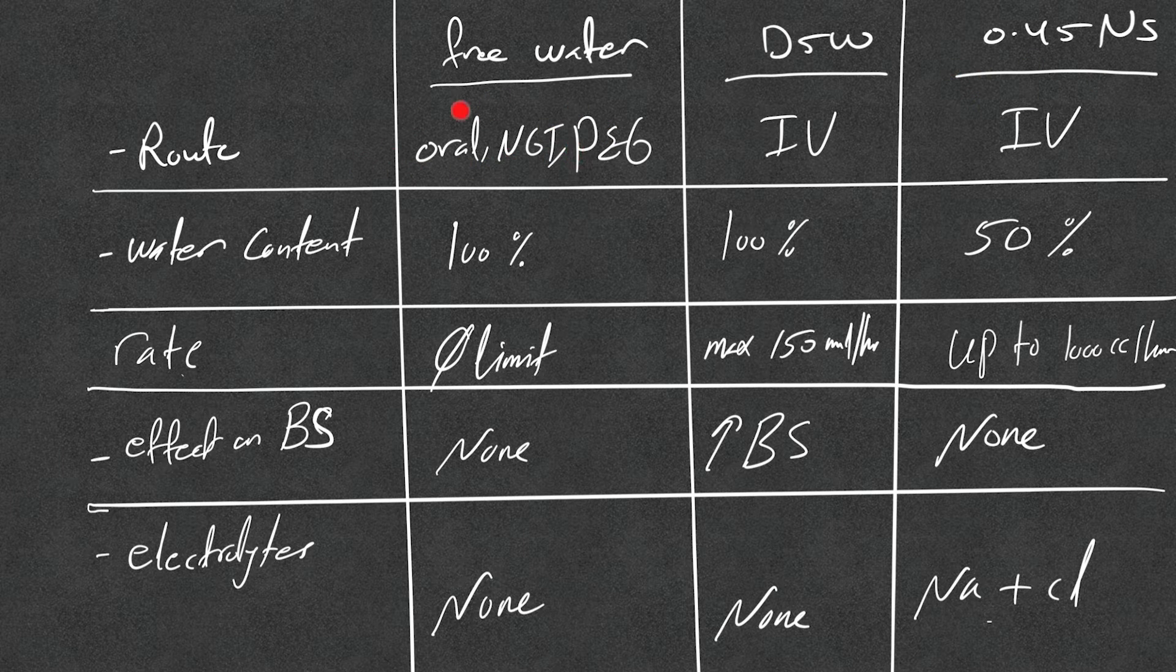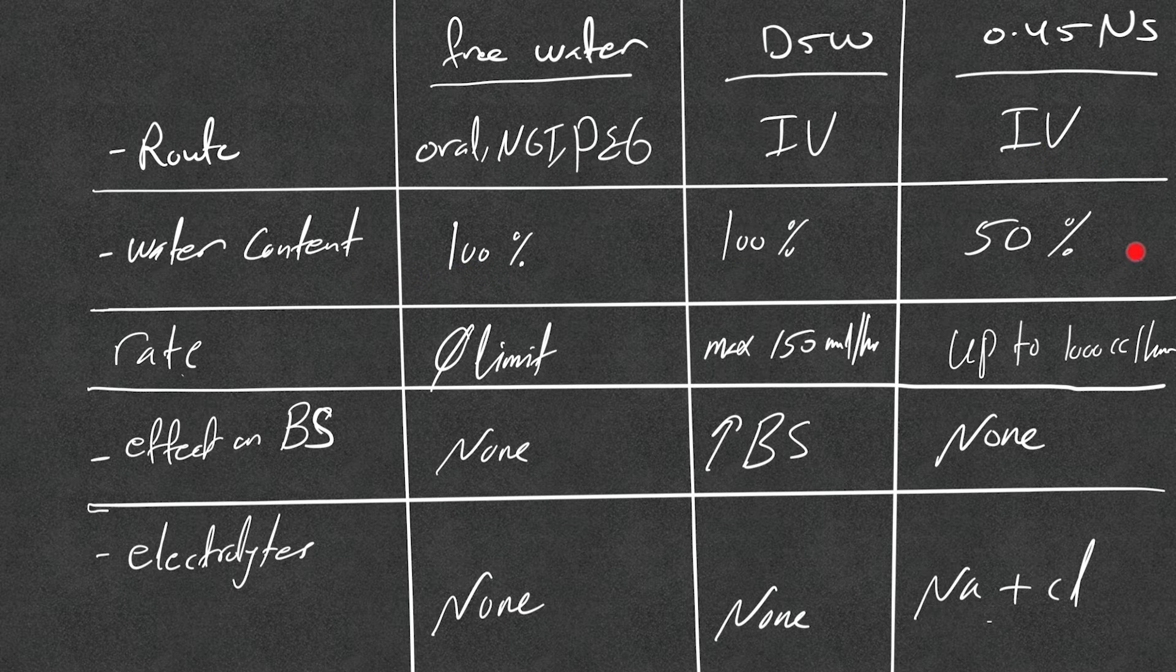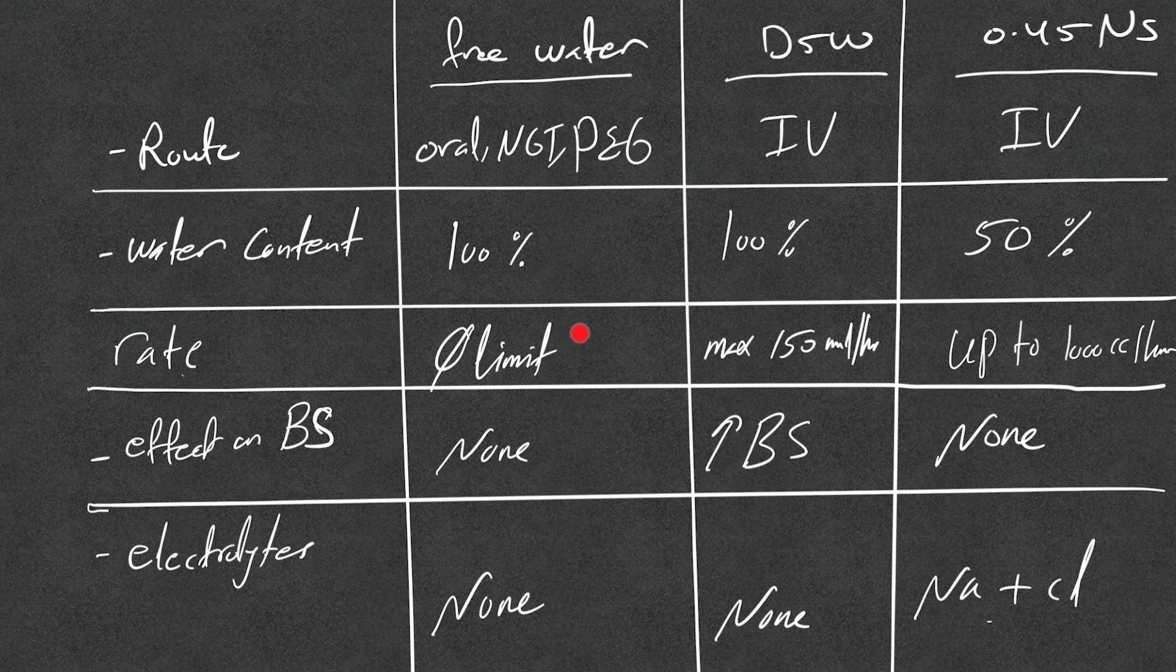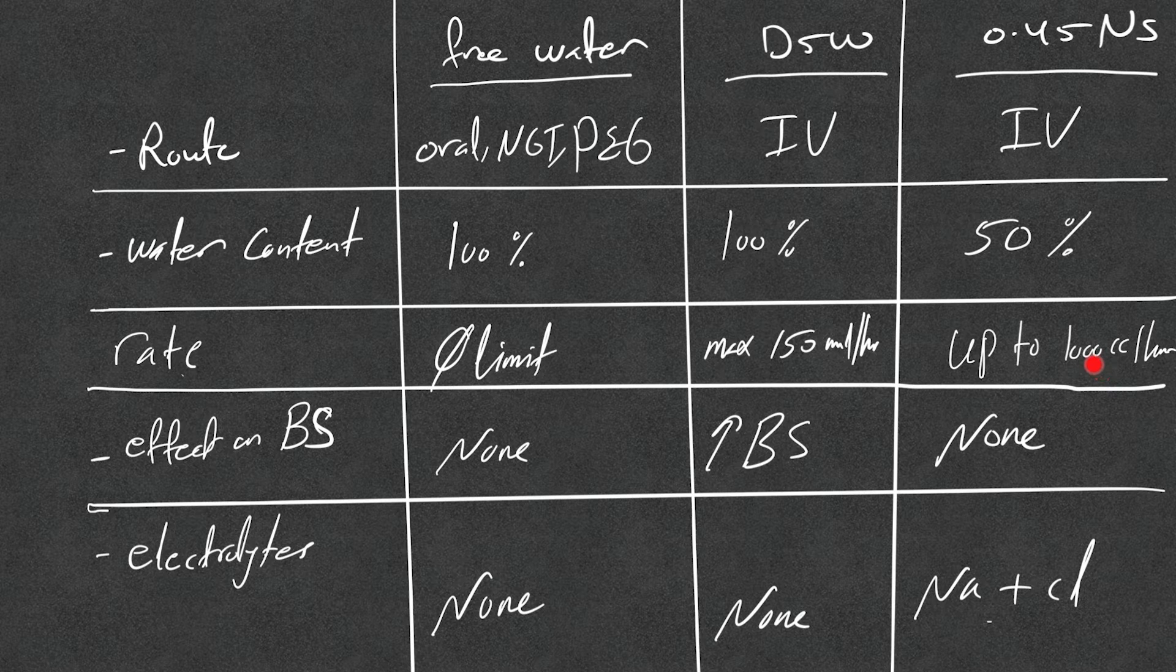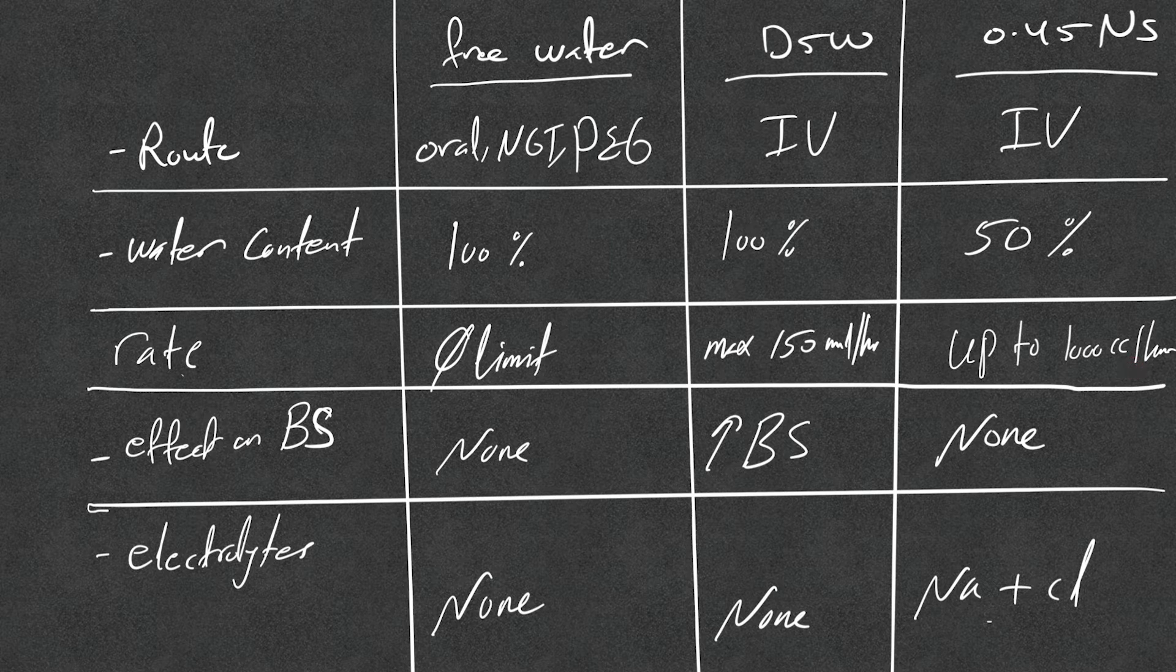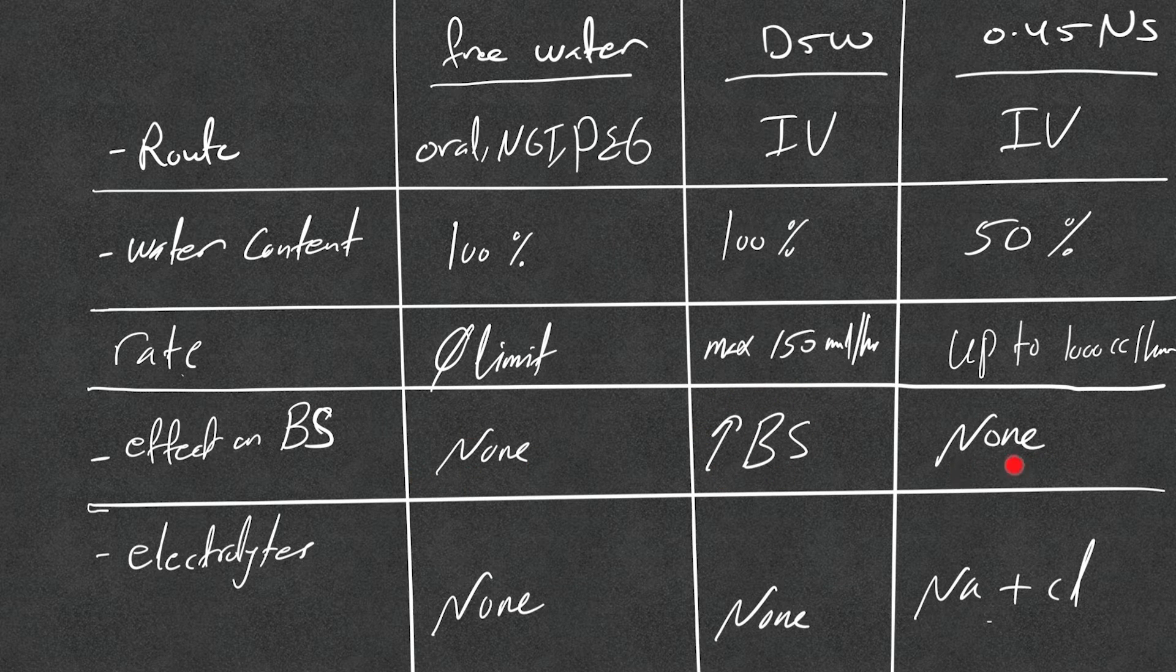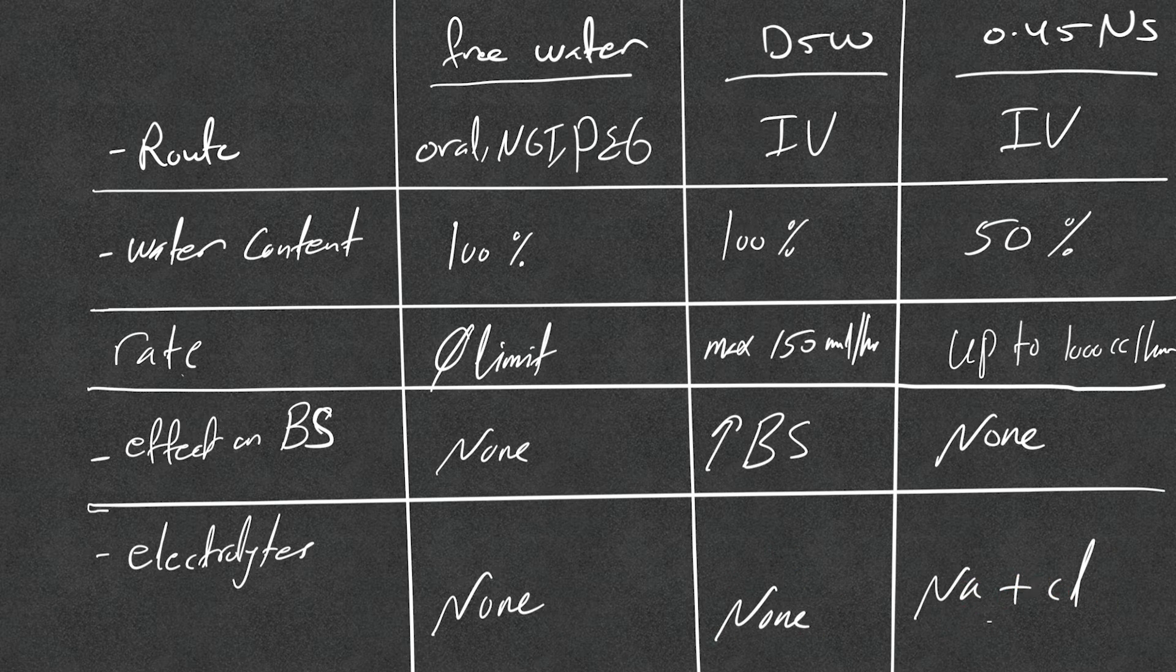Now there's a quick comparison between the free water or D5W and 0.45. Of course, this is to me more natural: oral NG tube or PEG tube here. IV. Water content: 100 percent, 100 percent, and 50 percent. Rate: literally there is no limit here, the patient can drink a whole liter in less than an hour or even in half an hour or even in one set, right? The maximum is 150 ml per hour here, up to 1000 cc an hour if we want to, although that will give them large sodium load as well. So you need to look into that, and they can worsen volume overload. Effect on blood sugar: none, of course worsens hyperglycemia, and none here. Electrolytes: none in the free water, none in the D5W, but sodium and chloride in half NS, right?